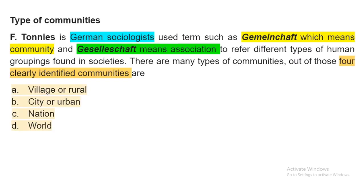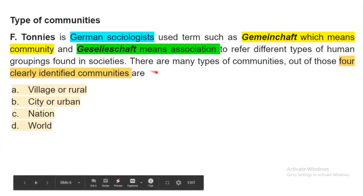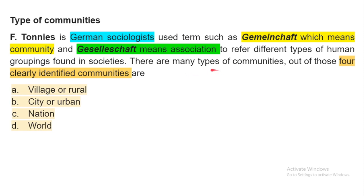Regarding types of communities: Ferdinand Tönnies, a German sociologist, gave two very important terms — Gemeinschaft, meaning community, and Gesellschaft, meaning association — to reference different types of human groupings in society. Four clearly identified community types are: rural or village, city or urban, nation, and world.